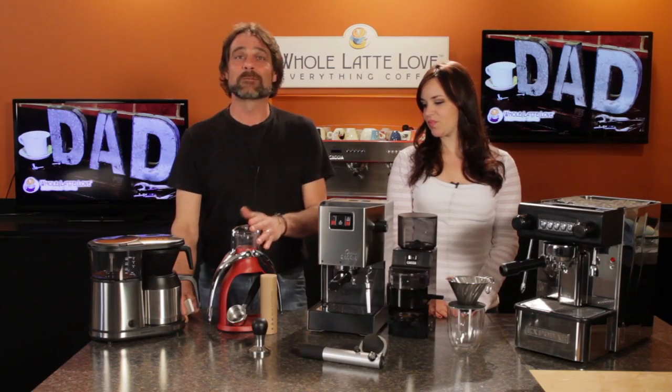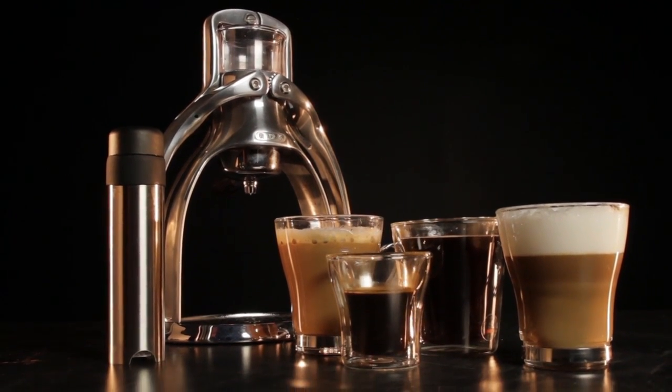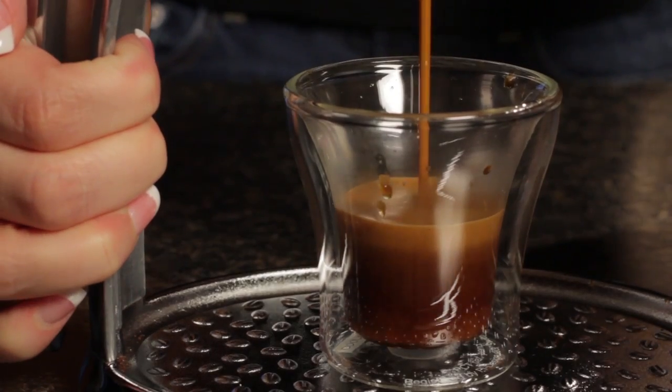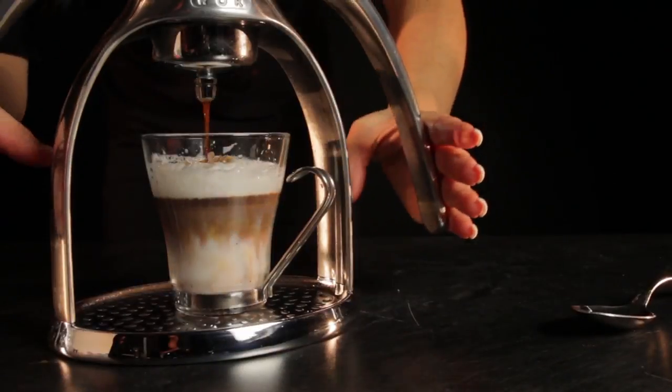Next up we've got the Rock Espresso Maker. GQ magazine calls it the lean green espresso machine. No power cord on this. Just add hot water and squeeze for espresso. It has a manual powered milk frother to texture milk for lattes and cappuccinos.